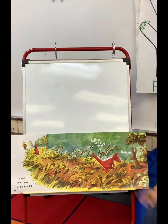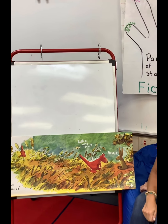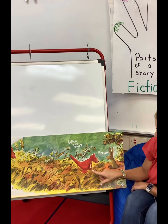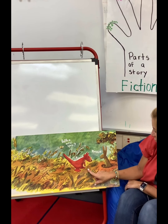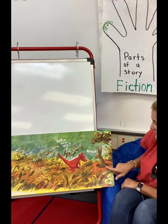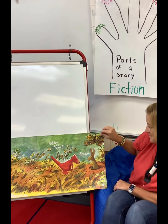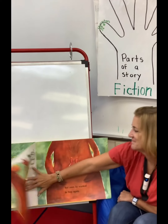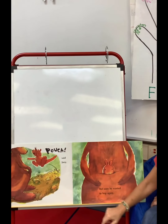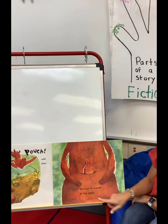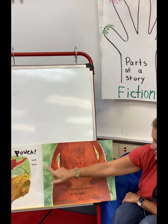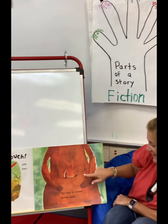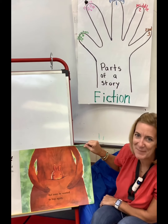But soon he wanted to hop again. He took three hops to the little hill. Hop, hop, hop. 'Who are you?' 'Rabbit.' 'Pouch!' said Joey, and he jumped back into his mama's pouch.